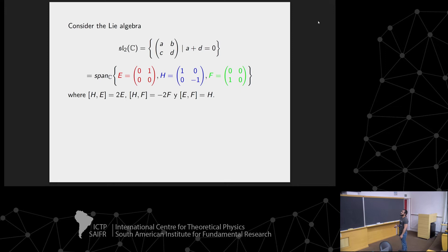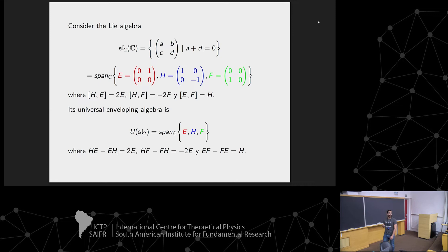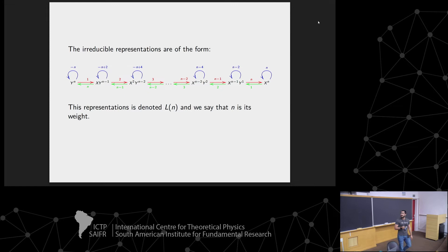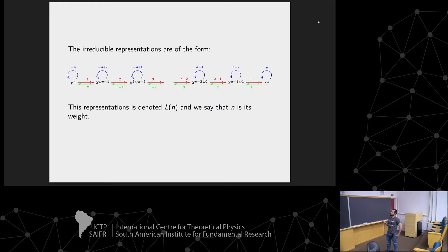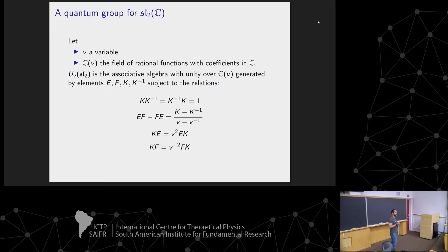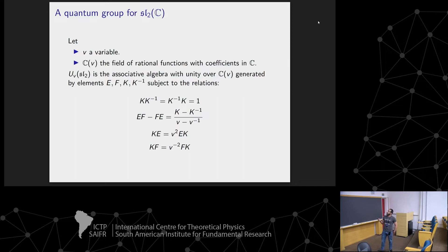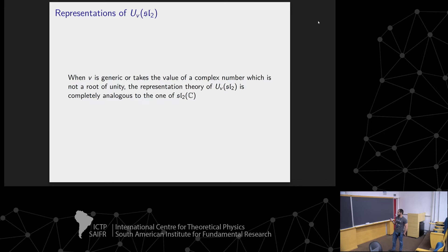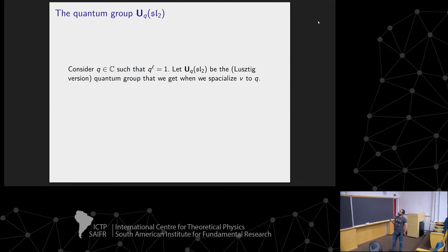The first object of interest is the enveloping algebra of SL2. We consider only finite-dimensional representations, denoted L_n. For quantum groups, two versions are considered: the generic version, which is an associative algebra in a variable v with specific generators and relations. When v is generic — a complex number that is not a root of unity or ±1 — the representation theory is essentially the same as for the usual algebra.